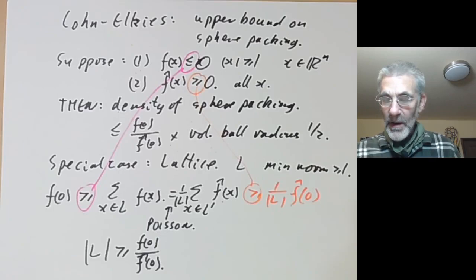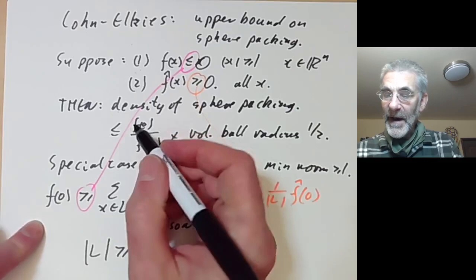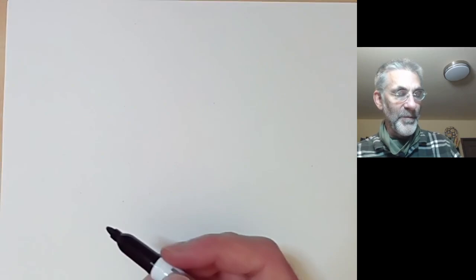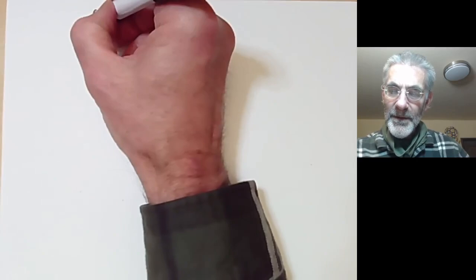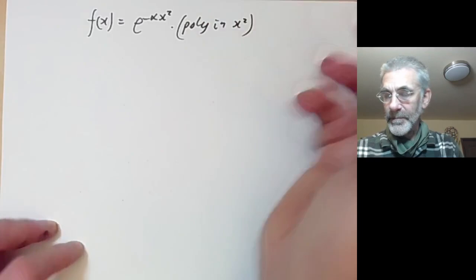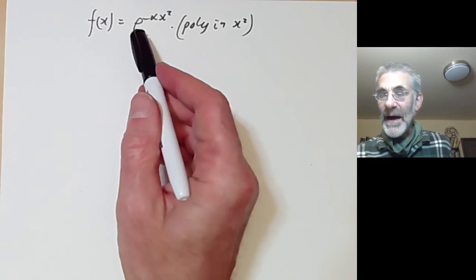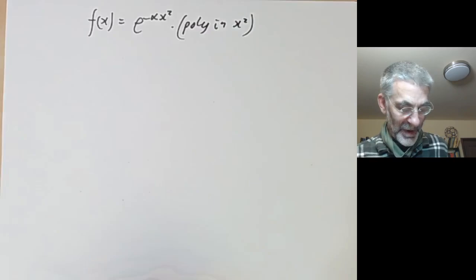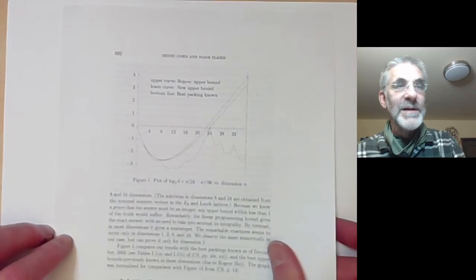So all you have to do to find an upper bound for sphere packings is find a really good function f and calculate f and its Fourier transform. You can take f to be something of the form e^(−αx²) times a polynomial in x². Elkies tried this out and got a computer to do some linear programming to find the best possible polynomial, and they were able to find upper bounds for lattices.